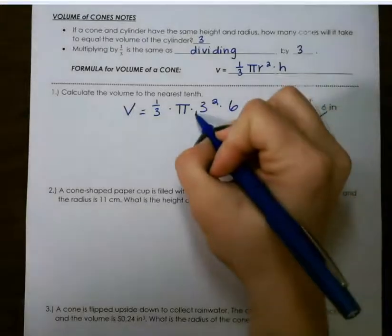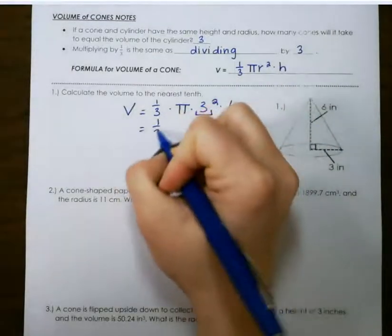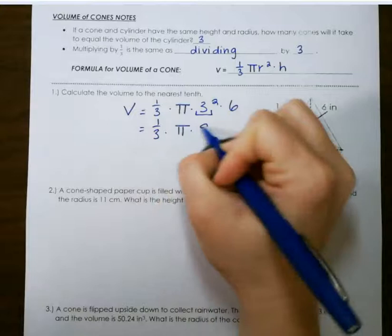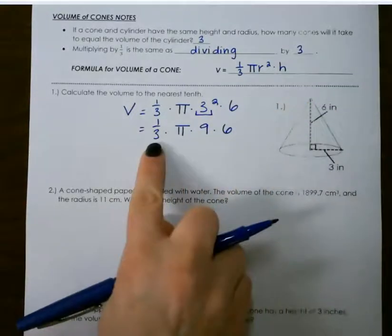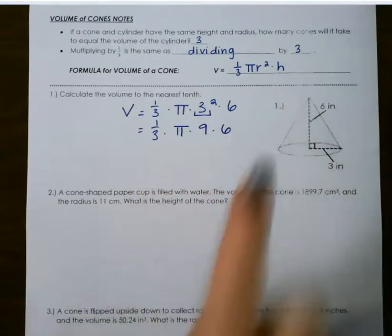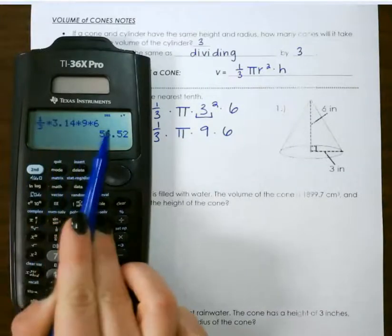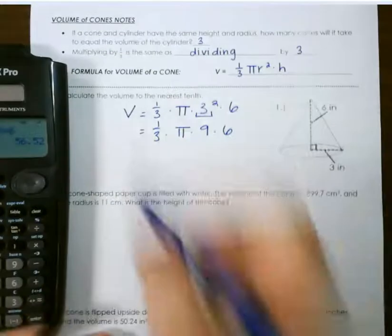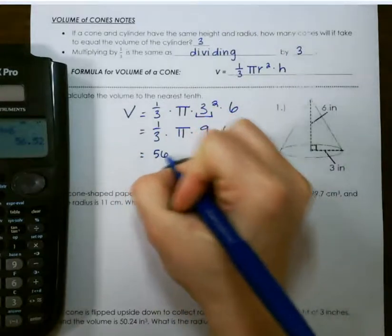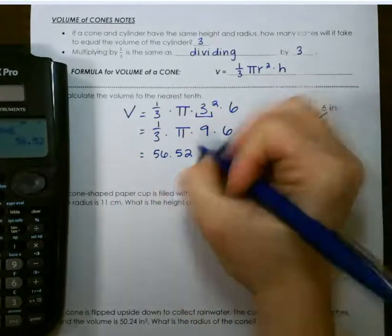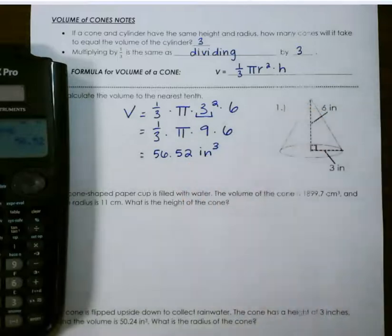I like to start with doing 3 squared, the exponent first, which gives me 9, and then I just plug all of this into my calculator. So 1 third times pi times 9 times 6 would give me a volume of 56.52 inches cubed since it's volume.